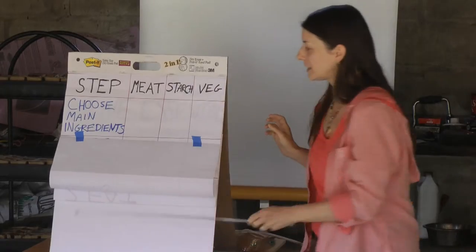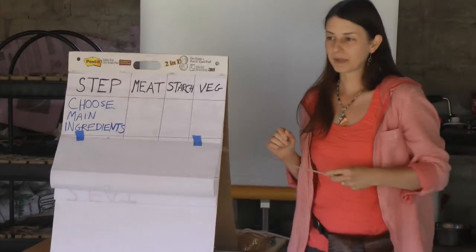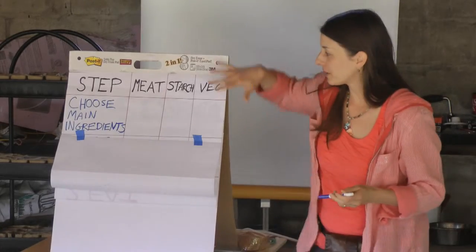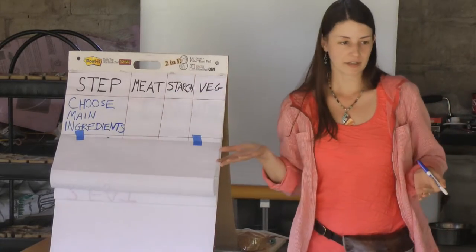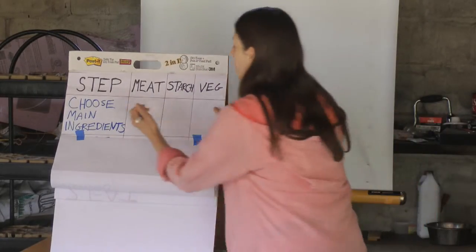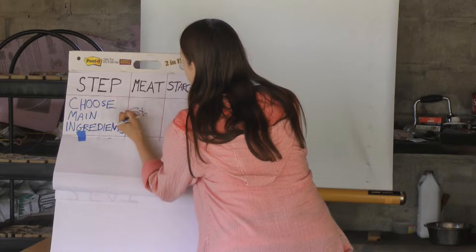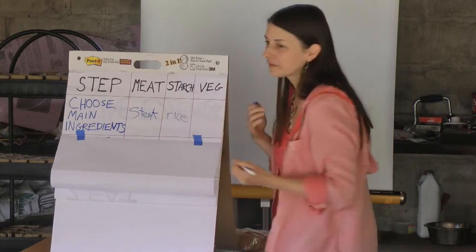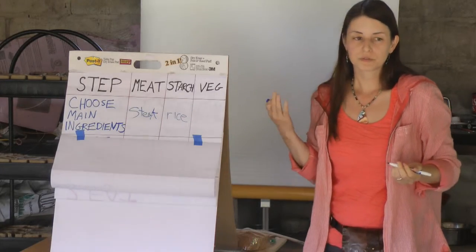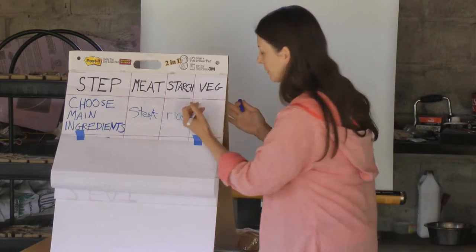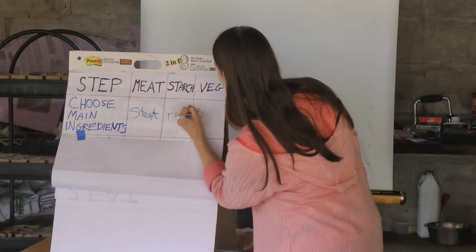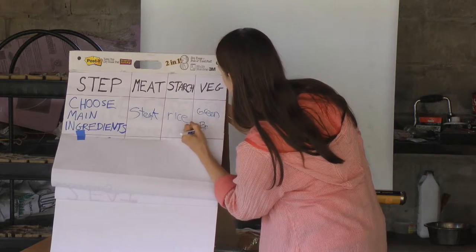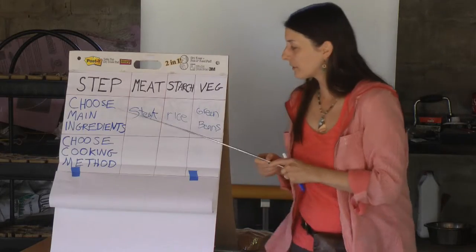If we go down one level of detail, we'll choose the main ingredients. So for example, one main ingredient for the meat could be steak. When we're going down, we're just going down one level of detail. And then for a vegetable, we can use green beans — my mom's favorite. So we've got our main ingredients.